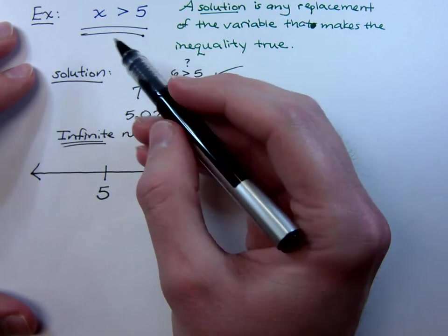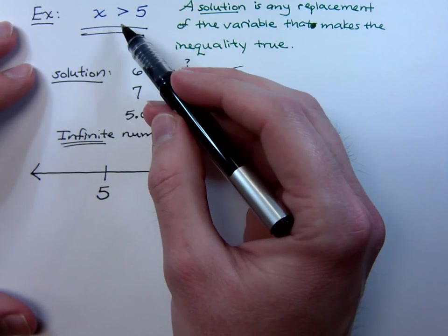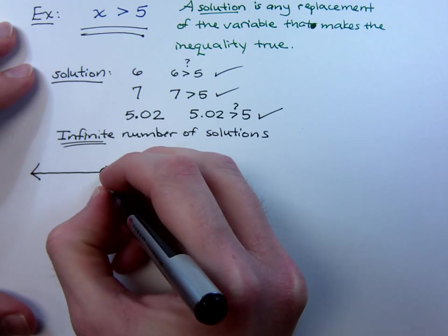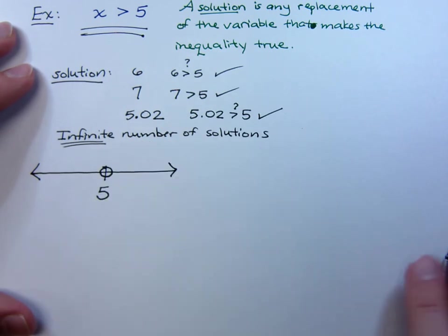Now, notice that this set x is greater than but not equal to 5. The way we would express that on a number line is to put an open circle.